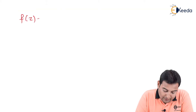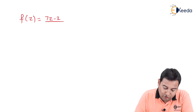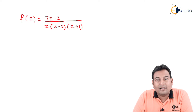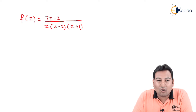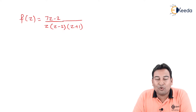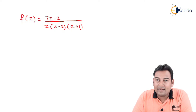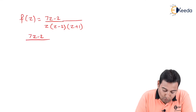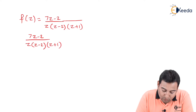f(z) is equal to (7z minus 2) upon z times (z minus 2) times (z plus 1). Again the same story — the same partial fraction concept. All the factors are linear, therefore we are going to take A, B, and C. So (7z minus 2) upon z(z minus 2)(z plus 1).